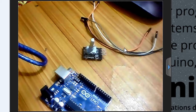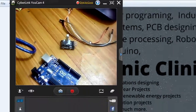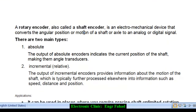We'll cover its pinouts, basic working principle, and how to find the direction of rotation of the rotary encoder. I will show you this through a 3D model design in SolidWorks. A rotary encoder, also called a shaft encoder, is an electromechanical device that converts the angular position or motion of a shaft or axle to an analog or digital signal.